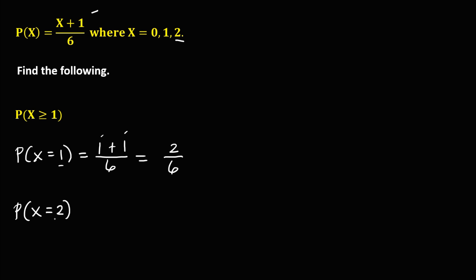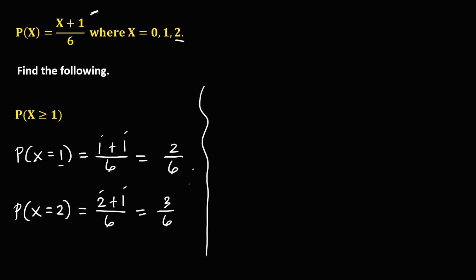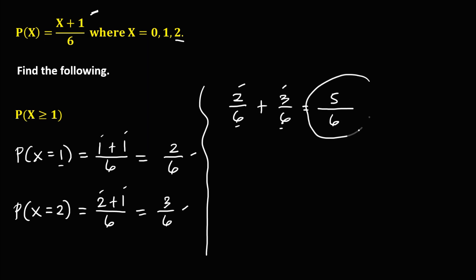Now for x greater than 1, x equals 2 because 2 is greater than 1. From this equation, x is 2, so we get (2 + 1) over 6, which simplifies to 3 over 6. Now we add the two fractions: 2 over 6 plus 3 over 6. Since the denominators are the same, just copy the denominator and add the numerators: 2 plus 3 is 5. Therefore, p(x ≥ 1) equals 5 over 6.